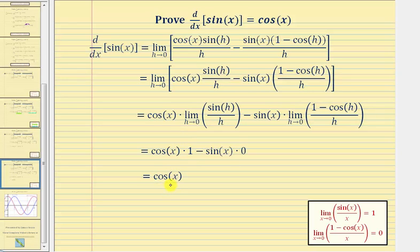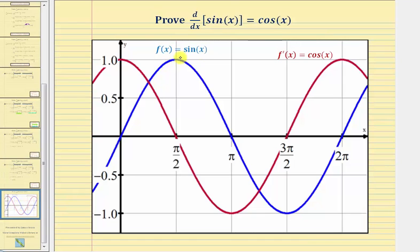Before we go, let's take a look at the graph of sine x and cosine x on the same coordinate plane. Here we have f of x equals sine x graphed in blue, and f prime of x equals cosine x graphed in red. It's pretty amazing that the cosine function values give us the slopes of the tangent lines to our sine function.